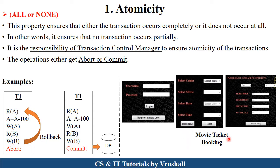Now let's see a real-life example — movie ticket booking. When you book a movie ticket, first there is a login window, then you select a movie, select a center, date, and time, and then you go to the next window for payment. If some server error or payment error occurs at that point, the transaction goes into a rollback state — meaning you log in again and fill in all the details again. This is called atomicity: either all transactions are performed or none of them are performed.